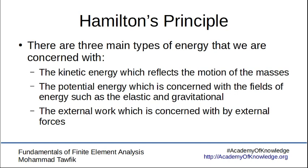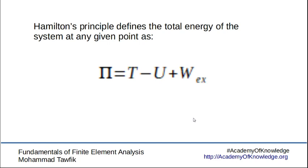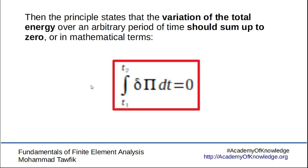In algebraic terms, Hamilton's principle defines the total energy of the problem as the kinetic energy T minus the potential energy U plus the external work W. These are the three terms representing the total energy of the system. Hamilton's principle then says that the integration of the variation of the total energy over a given period of time, where you know the initial state and the final state, should always be zero.